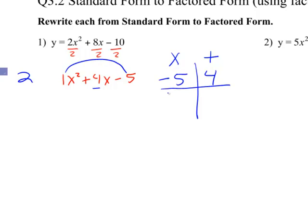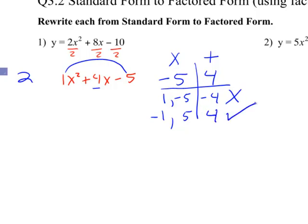I start with 1 and work my way down. So 1 and negative 5 — when I multiply them they give me negative 5, but when I add them they give me negative 4. That's not what I want; I want positive 4. So my trick is to change the signs of everything. A positive 1 becomes negative 1, a negative 5 becomes positive 5. Negative 1 plus positive 5 gives me positive 4 — that's what I was looking for.